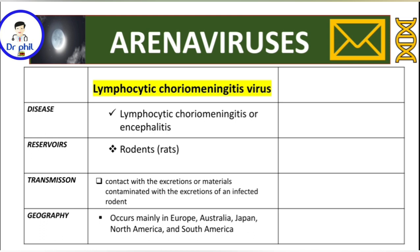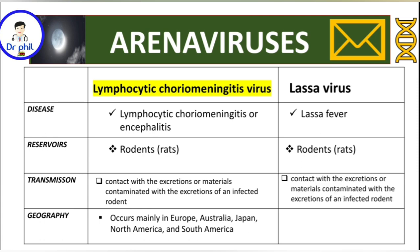For completeness, I'll also mention the Lassa virus. Lassa is a village in Nigeria where it was first detected. This virus causes Lassa fever. The reservoirs are rodents, and transmission is the same — contact with excretions or materials contaminated with the excretions of infected rodents. Geographically, it is found mainly in West Africa.